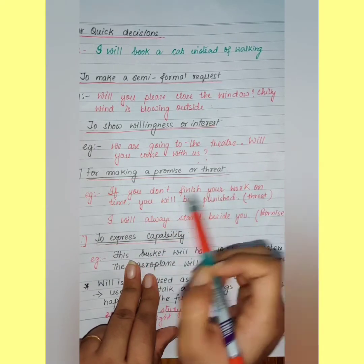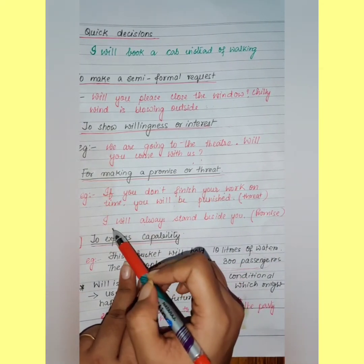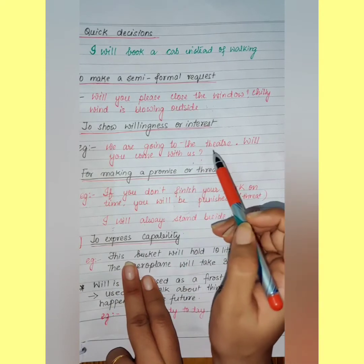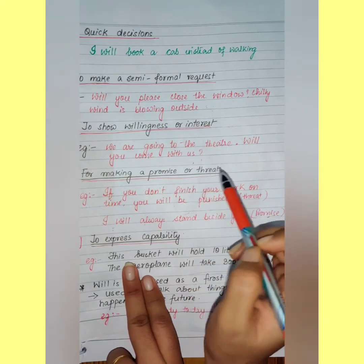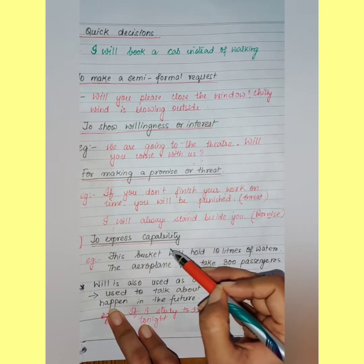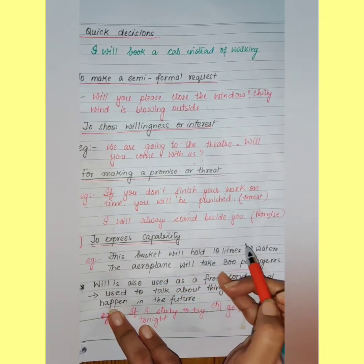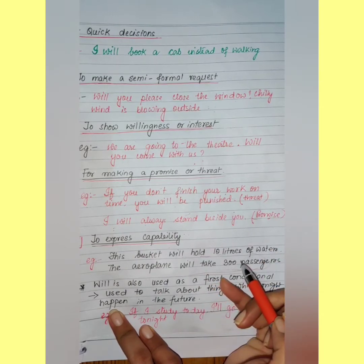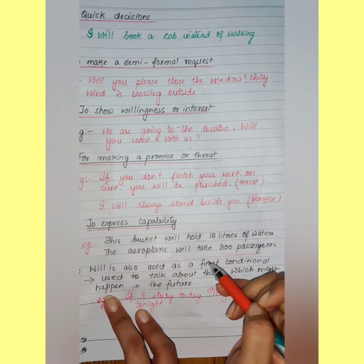For a promise: 'I will always stand beside you.' So you can use 'will' for quick decisions, semi-formal requests, beliefs about present and future, and making promises or threats. Will is also used to express capability or capacity. For example: 'This bucket will hold 10 liters of water' shows the capacity of the bucket, and 'The airplane will take 300 passengers' shows the capacity of the plane.